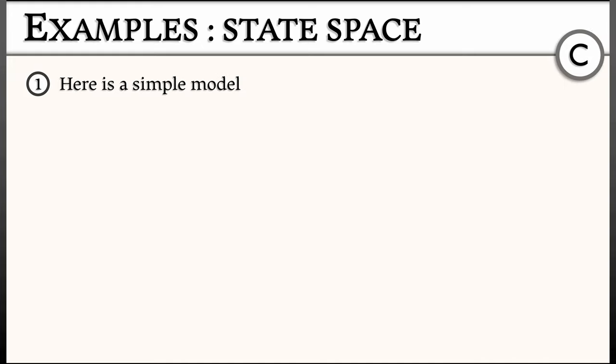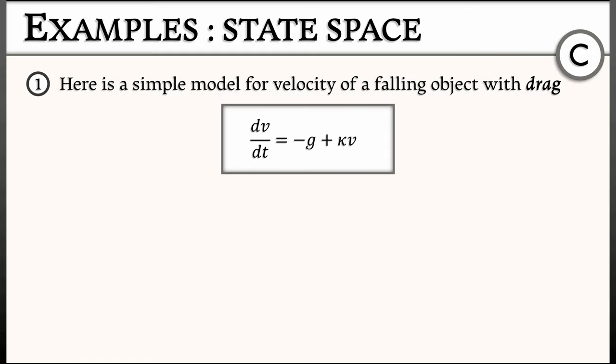Consider a continuous time model for the velocity of a body or an object that is falling with drag. This is going to be determined by a differential equation dv/dt equals minus g plus kappa v squared. Here v is the velocity, and it's assumed to be negative because this body is falling. g and kappa are constants, the gravitation constant and the drag coefficient,